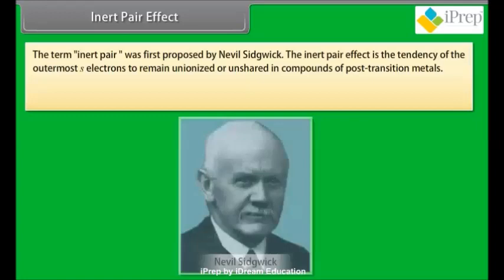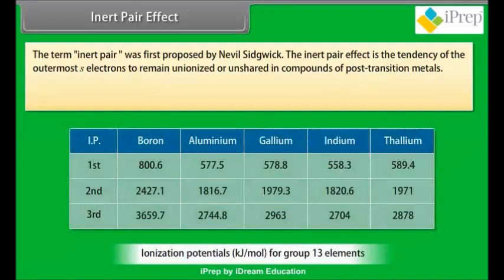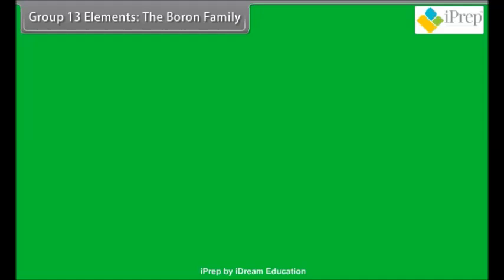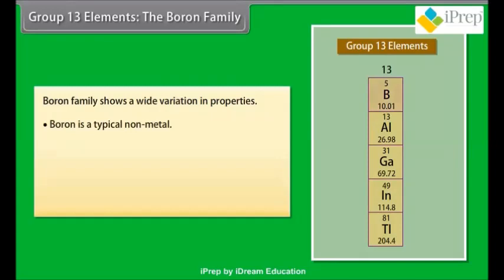Inert pair effect. The term inert pair was first proposed by Neville Sidgwick. The inert pair effect is the tendency of the outermost S-electrons to remain unionized or unshared in compounds of post-transition metals. The term inert pair effect is often used in relation to the increasing stability of oxidation states that are 2 less than the group valency for the heavier elements of groups 13, 14, 15, and 16.